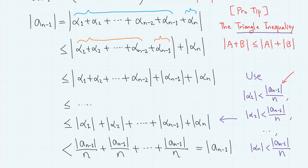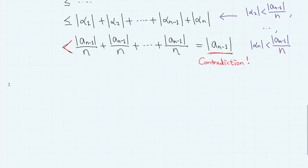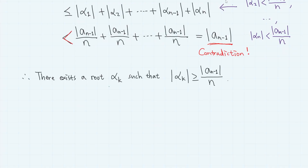So we have the absolute value of a_{n-1} is less than the absolute value of a_{n-1}, which is a contradiction. Therefore, there exists at least one root whose absolute value is greater than or equal to the absolute value of a_{n-1} divided by n. And that's all for today's video. Thank you all for watching. Please don't forget to hit the like and subscribe buttons if you enjoyed this video, and I will see you in another video.